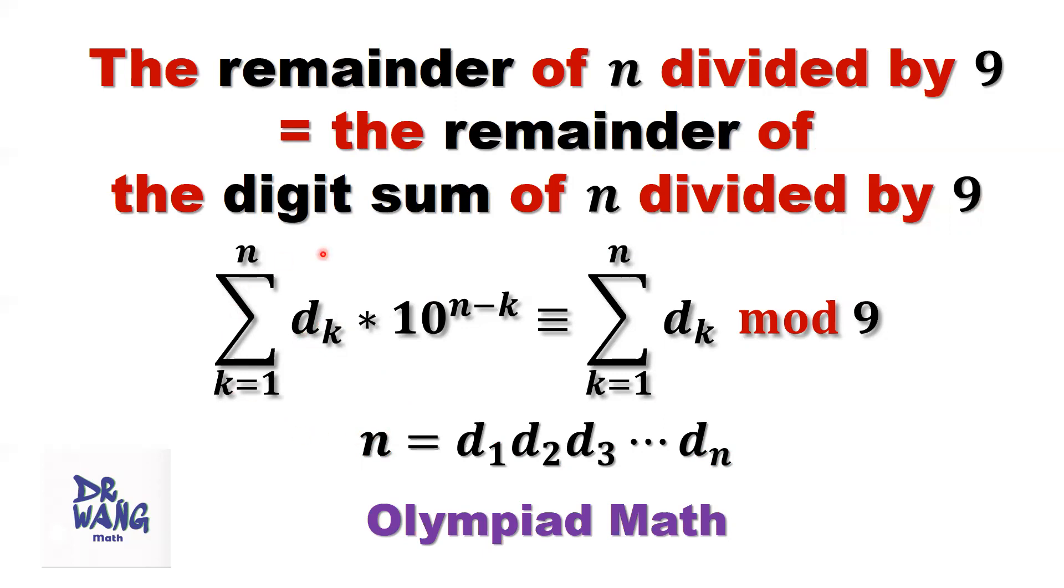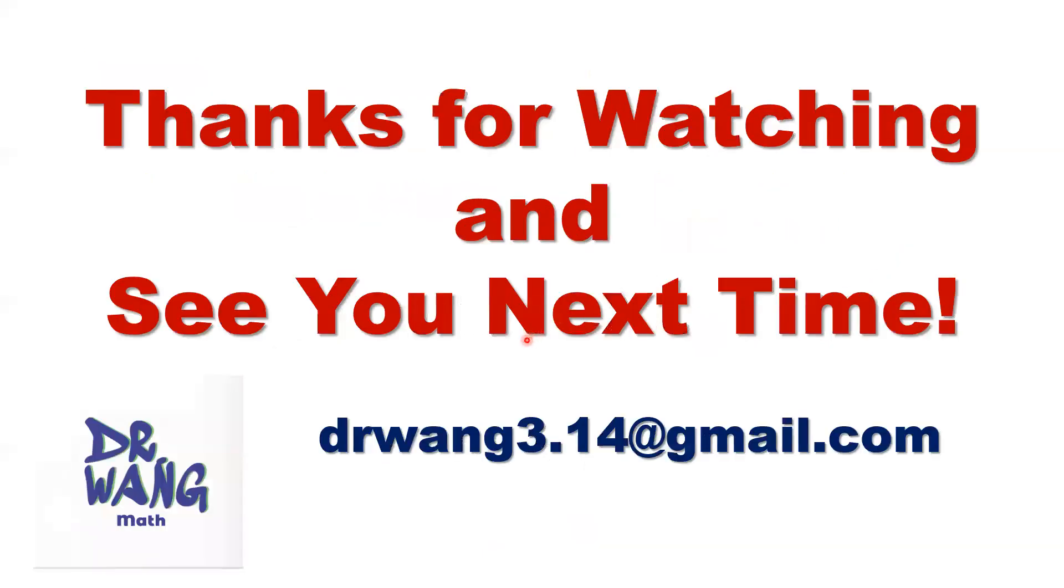So that's a mathematical notation. And in this kind of format, first digit, second digit, and nth digit. If you don't quite get this, it's fine. Just consider the remainder of n divided by 9 equals the remainder of digital sum of n divided by 9. Thanks for watching and I'll see you next time.